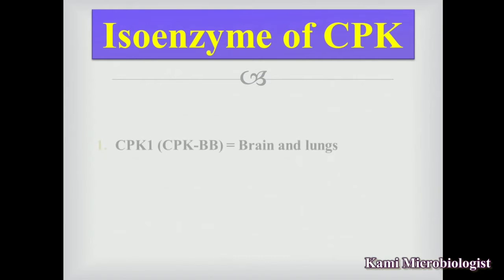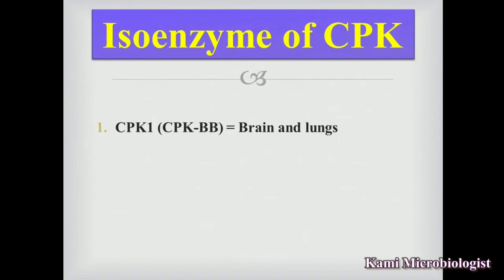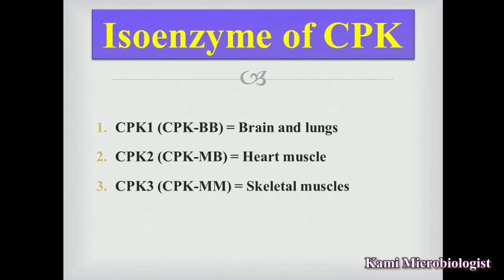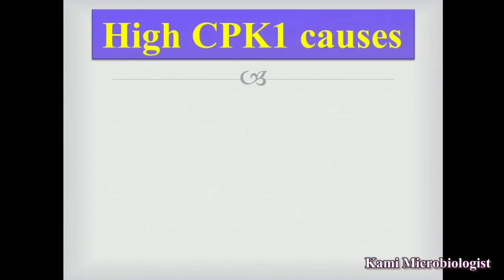Next we have the isoenzymes of CPK. There are three isoenzymes of CPK — isoenzymes are enzymes that have the same function but different structures. The first is CPK-1, also called CPK-BB, found in the brain and lungs. The second is CPK-2, also called CPK-MB, found in the heart muscle. The third is CPK-3, also called CPK-MM, found in the skeletal muscle.